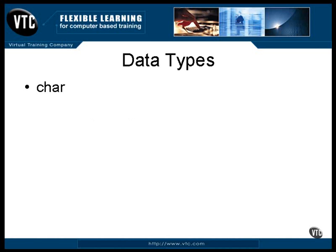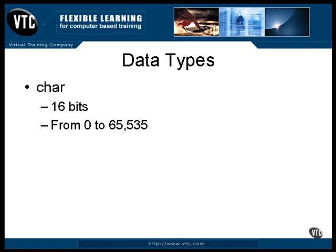A char is a 16-bit value. It can be treated like an integer value — you can do arithmetic on it — but it is intended to hold characters. While you can treat it like an integer, it has a couple of characteristics that no other integer data types have. First, it's unsigned, meaning its value ranges from 0 to 65,535. Second, in a Java program, a char data type is always interpreted as the numeric value of a displayable character. It holds the Unicode characters, and we're going to have more on Unicode later.